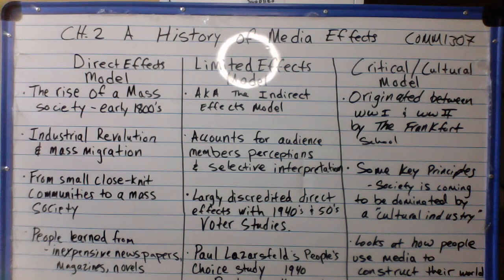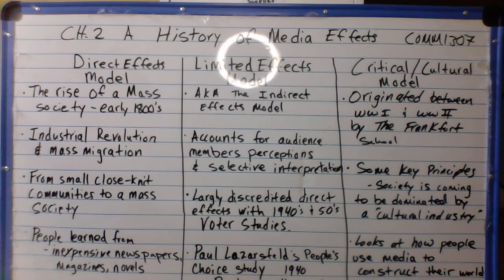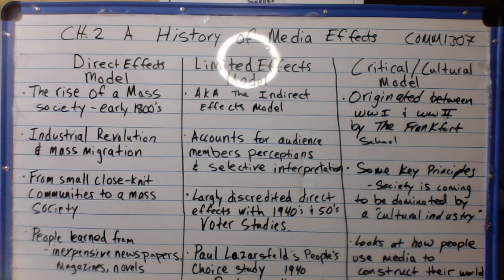The rise of a mass society in the early 1800s, as you see here on the left hand side, is a direct indication of life prior to the 1800s. We're seeing the French Revolution in the 1700s and the American Revolution, as well as the increase of the Industrial Revolution on society, creating new opportunities for people to move out of small close-knit communities into what is deemed a mass society — moving away from farms into factories to find work.